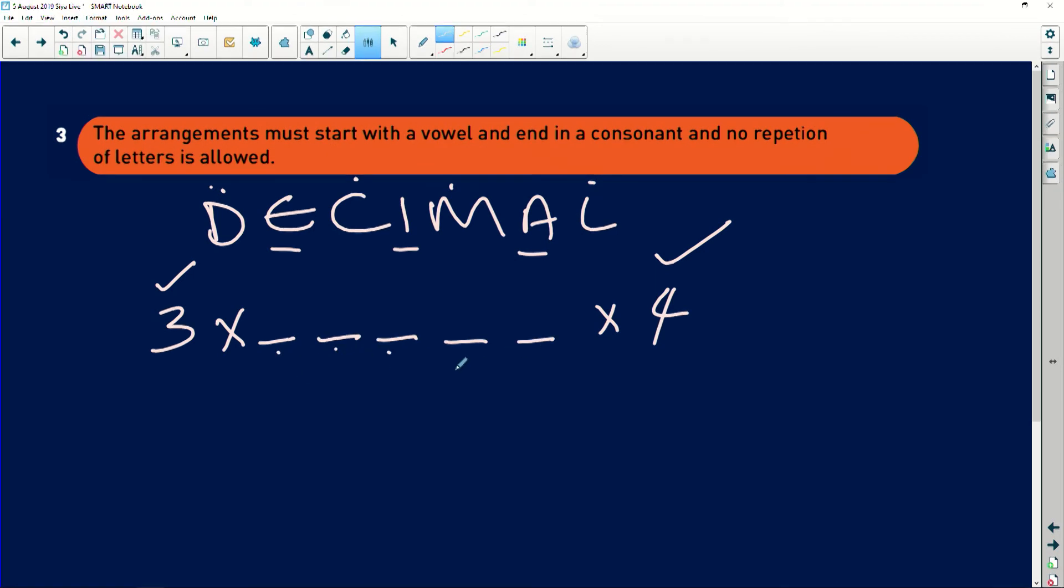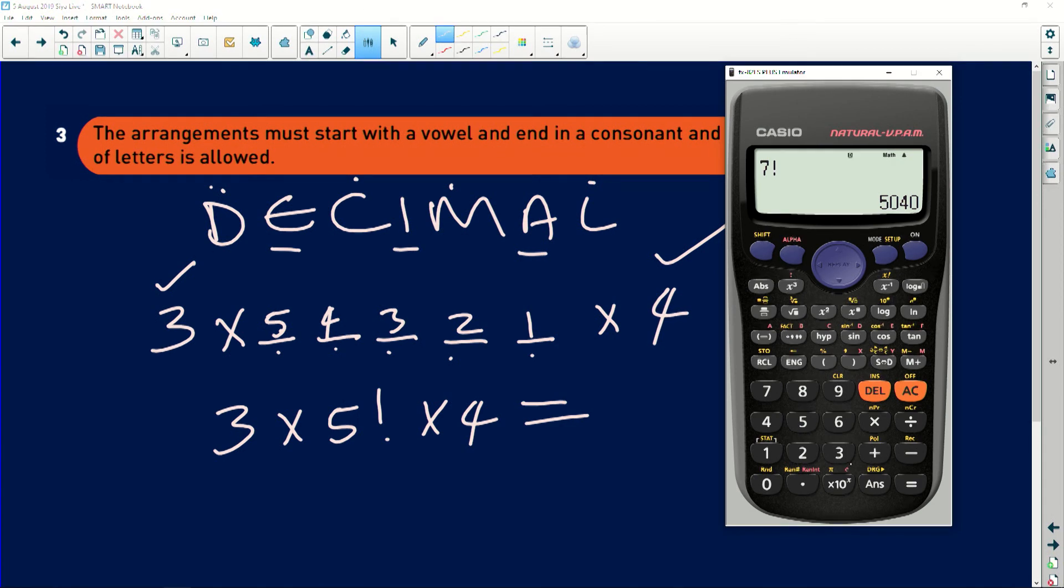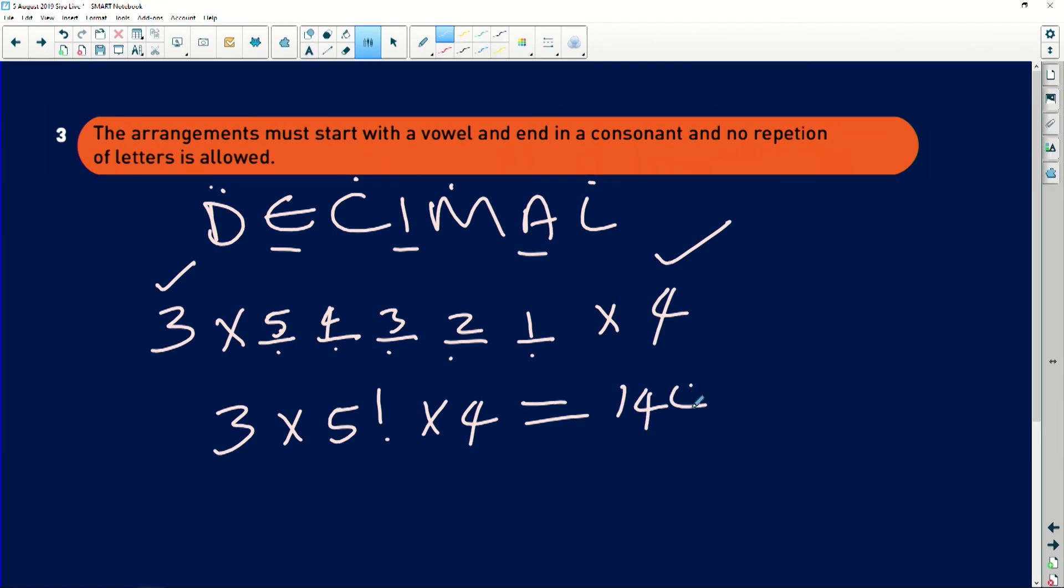So I'm left with five spaces, one, two, three, four, five. It means here this can only be placed at five spaces. This can be placed at four spaces because already the fifth one is accommodated. This one can be placed at three spots because two have already been accommodated. Then two, then one, because now all of them are accommodated. So in simple terms, this is three multiplied by five factorial multiplied by four, which will be equal to 1440. So I'm going to have three multiplied by five factorial multiplied by four, which will be 1440.